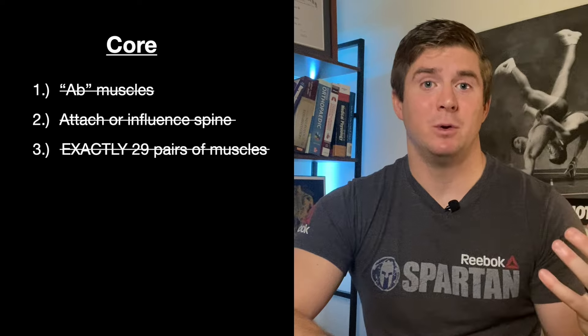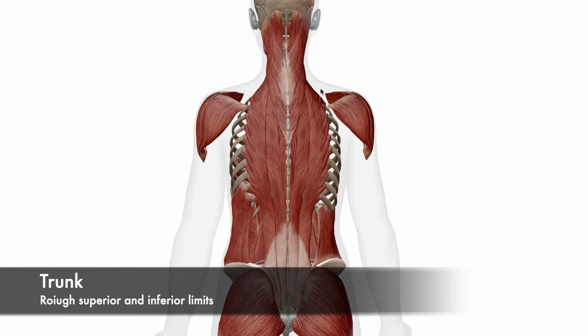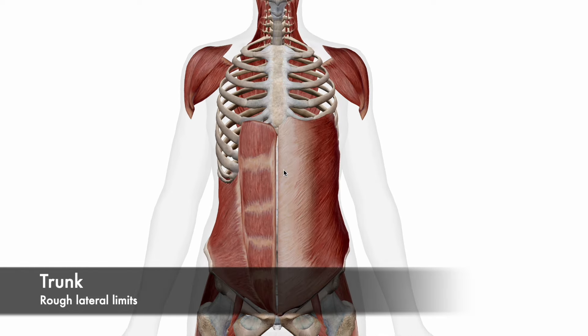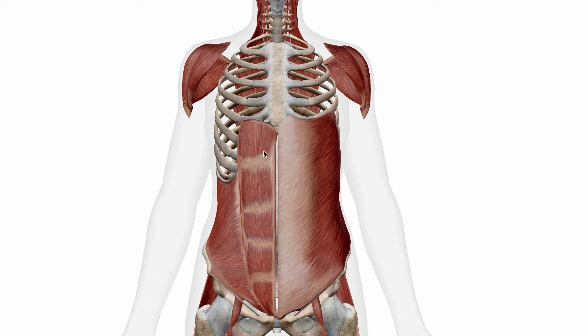So what the hell is it? Since there's a lot of ambiguity, I very rarely use the term core. Instead, I use and will continue to use terms like trunk, trunk stability, and trunk control. This way we aren't always narrowing it down to specific muscles, but rather highlighting different muscles in different positions when necessary. I consider the trunk to be a broad region — from the neck to the glutes top to bottom, and the width of your midsection from shoulder to shoulder.